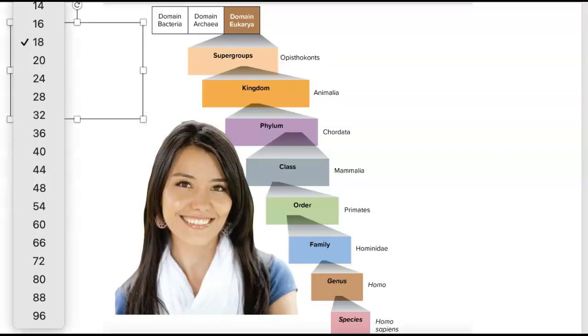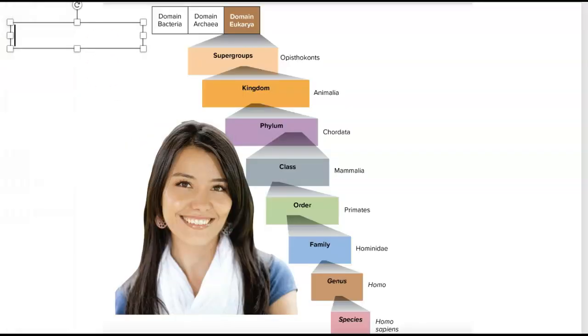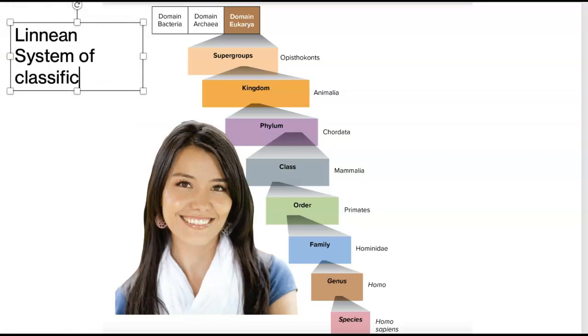And this is a fantastic system that has been changed and adjusted and modified and revamped and tweaked. And the system itself has evolved to some extent over hundreds of years as we gained new information. Now, the original Linnaean system was based on if you move, you're an animal. If you don't move, you're a plant. That's it.